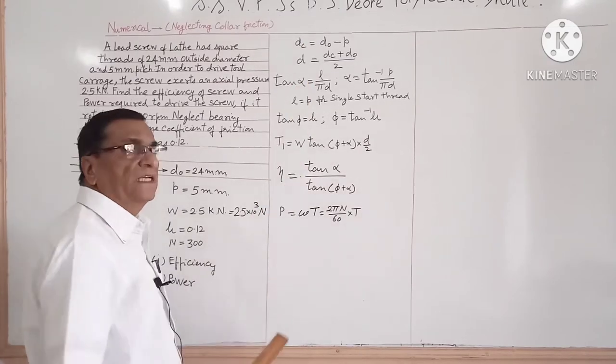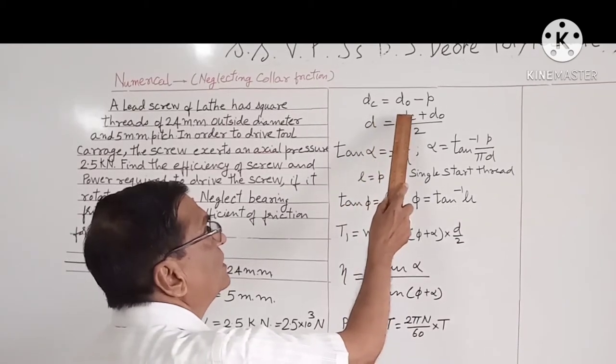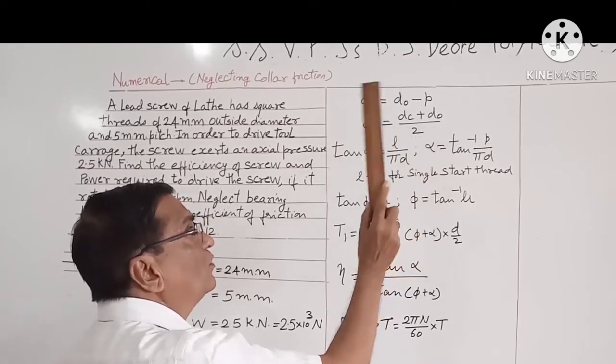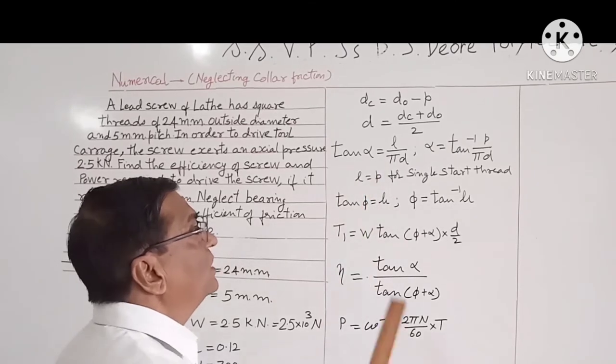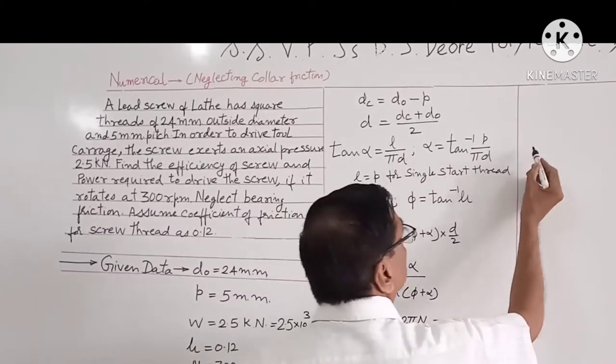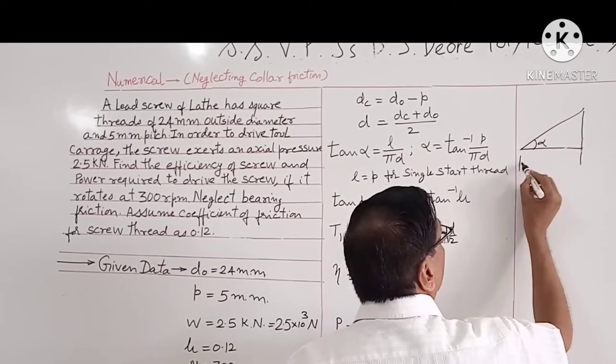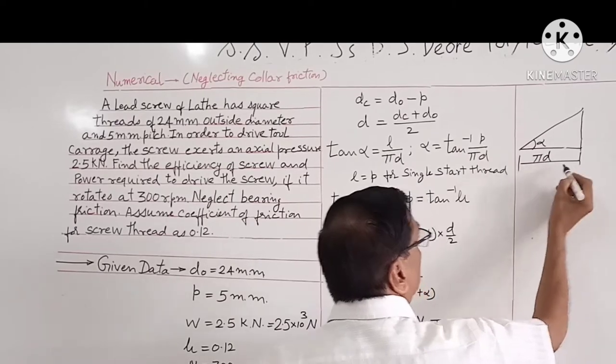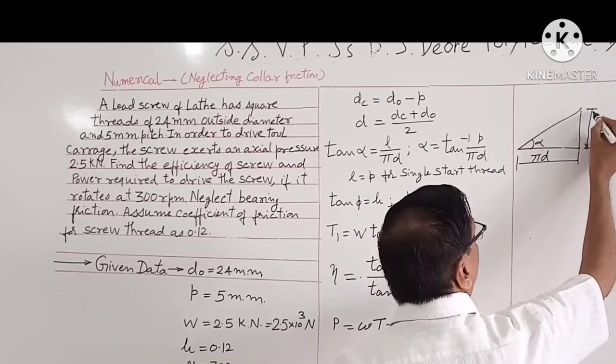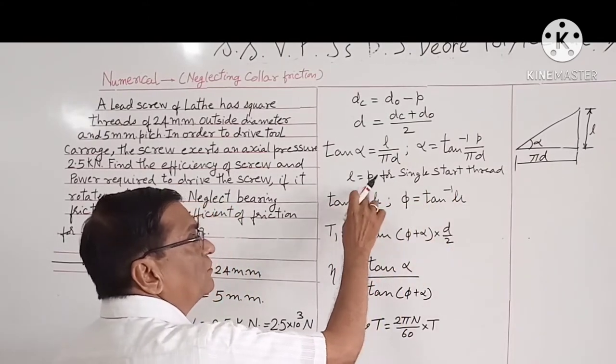Now first of all we will list down the formulas required. Core diameter is equal to DO minus P. Mean diameter is the summation or average of DC plus DO upon 2. Tan alpha is equal to lead upon pi D. From this triangle, this is alpha helix angle, and this is circumference of mean effective diameter, and this is equal to lead. Now for single start thread, L is equal to P.